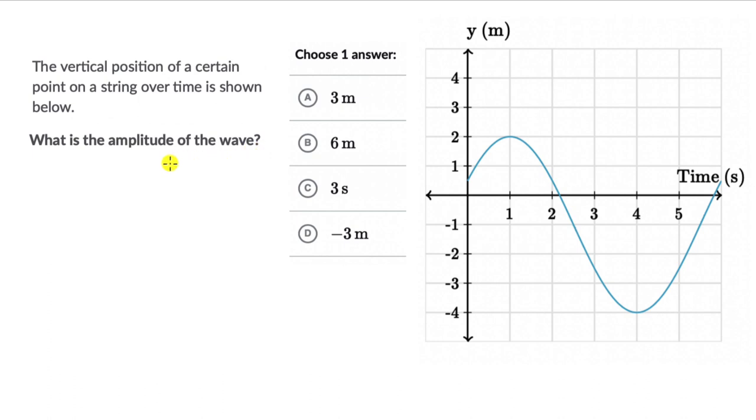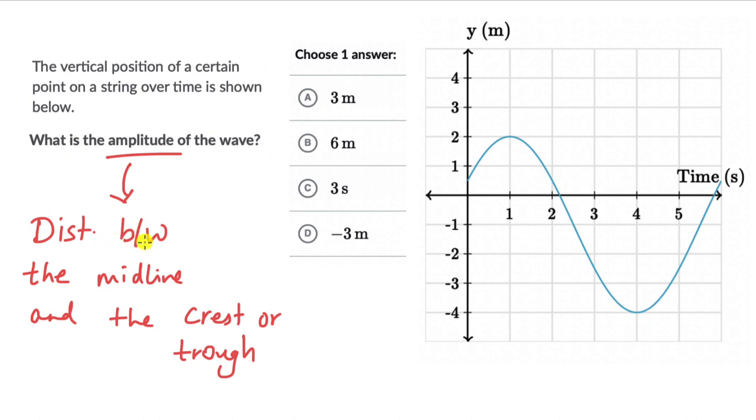Okay, so now here we can ask ourselves, what is amplitude? Amplitude was the distance between the midline or the equilibrium line and the maximum point of displacement, the crest or the trough. So this was amplitude, distance between the midline and the crest or trough, maximum positive displacement or maximum negative displacement from the equilibrium line. That was amplitude.